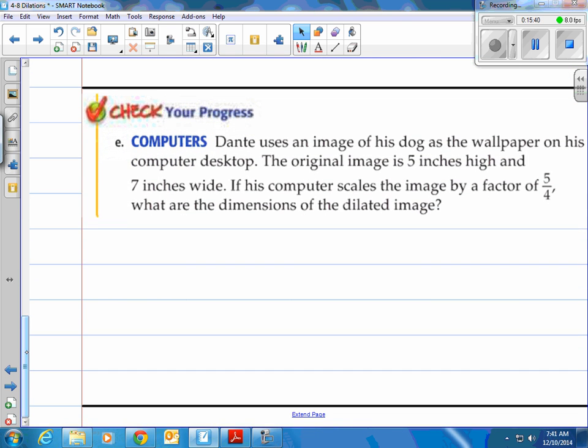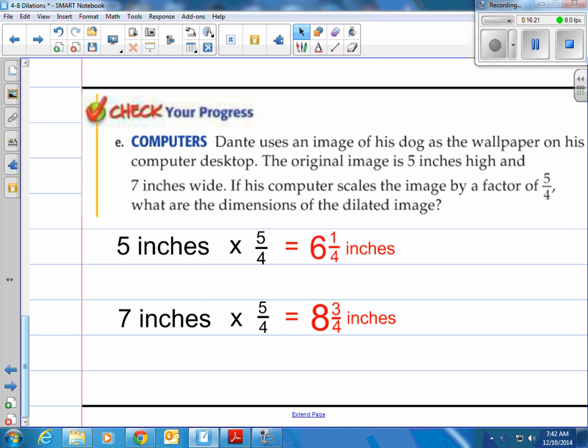How about you give it a shot here? It says Dante uses an image of his dog as the wallpaper on his computer desktop. The original image is 5 inches high and 7 inches wide. If his computer scales the image by a factor of 5 over 4 or 1 and 1 fourth, 1.25, what are the dimensions of the dilated image? So the original is 5 inches and 7 inches. And now we're going to scale factor it and dilate it by 5 over 4. Simple. Take our original amounts. 5 inches and 7 inches. Multiply by 5 over 4. You'll get the new values after the dilation of the image. And those will be 6 and 1 fourth inches and 8 and 3 fourths inches.